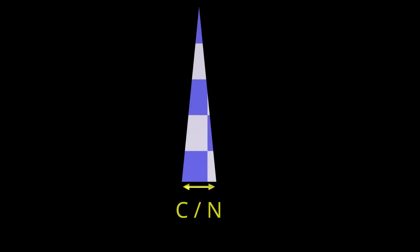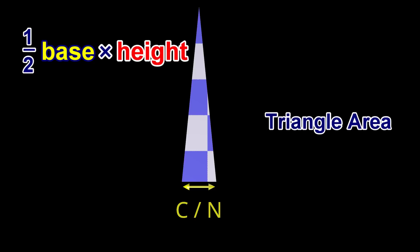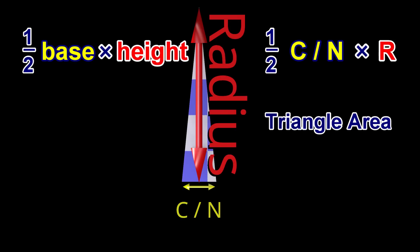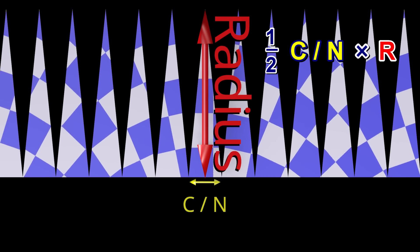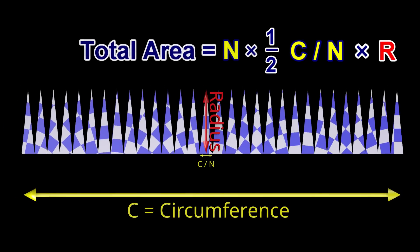The area of each triangle is equal to one half of the base multiplied by the height. The total sum of all the areas of all the triangles: the variable N in the numerator cancels out the variable N in the denominator, and the variable N is therefore removed from the equation.